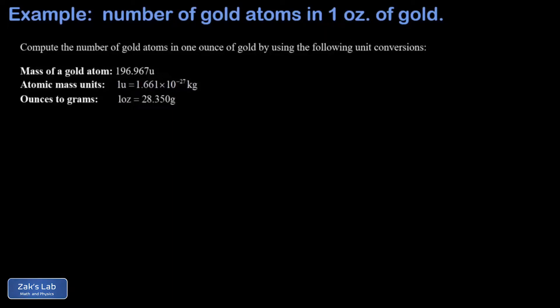In this video we're looking at some unit conversions and the question that we're asked is to find the number of gold atoms in one ounce of gold. We're given a few conversions to work with here.